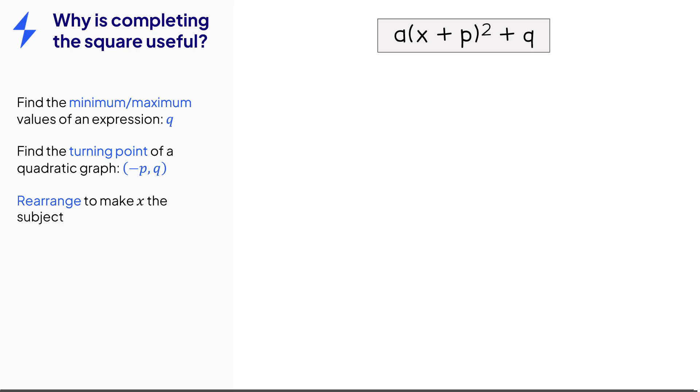We can also use completing the square to rearrange formulae. For this formula there are two terms that have an x in them. This makes it hard to rearrange. Whereas we complete the square there's only one term now that has an x in it which makes it easier to rearrange. So rearrange it.